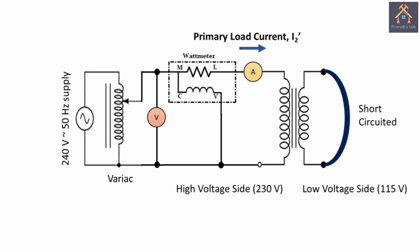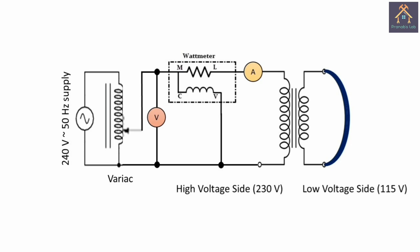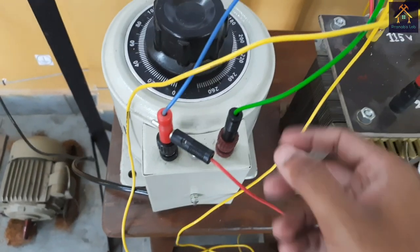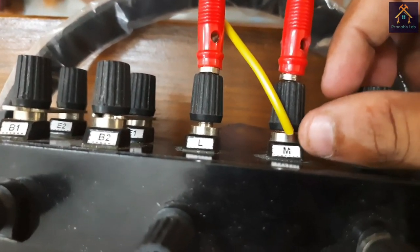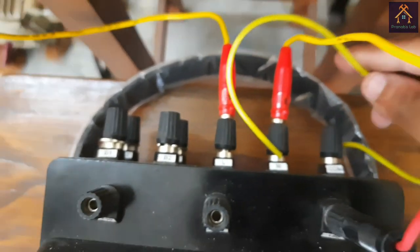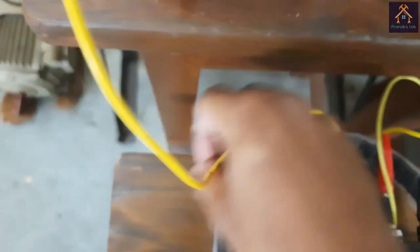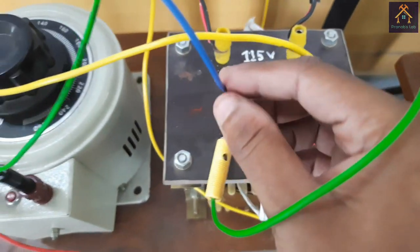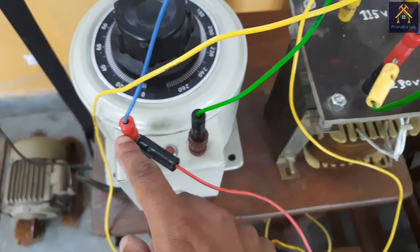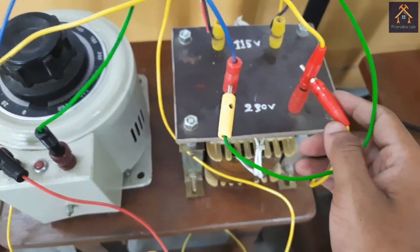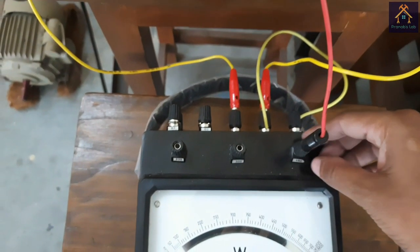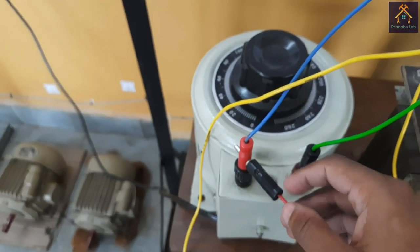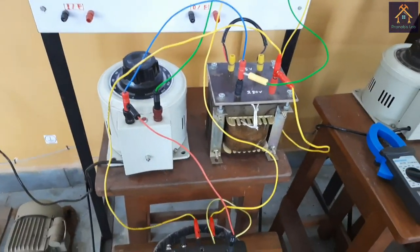The secondary low voltage side is to be shorted with a thick wire so that it can carry a large amount of load current. The input terminal of the variac is connected with the 240 volt AC supply, and the secondary terminal of the variac is connected with an ammeter. From the ammeter, it is connected with the M terminal of the wattmeter. The MC terminal of the wattmeter is shorted, and the L terminal of the wattmeter is connected with the high voltage side of the transformer. Another terminal of the high voltage side is connected with the neutral terminal of the variac. The low voltage side is short circuited. Across the high voltage side, we have connected a low range voltmeter. The V terminal — that means the 150 volt terminal of the wattmeter — is connected with the neutral terminal of the variac. So this is our connection for this experiment.